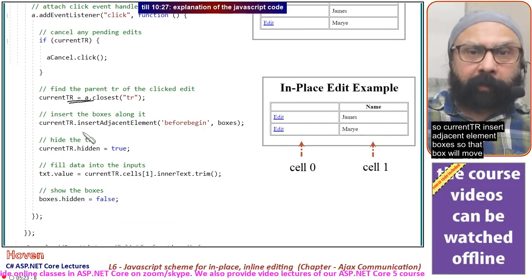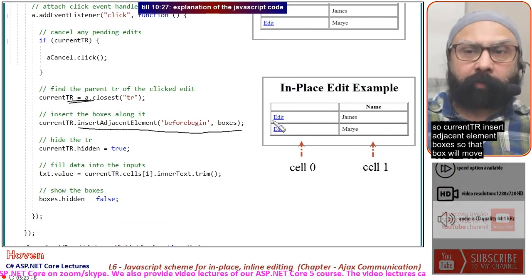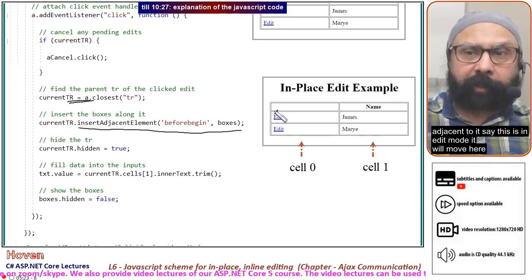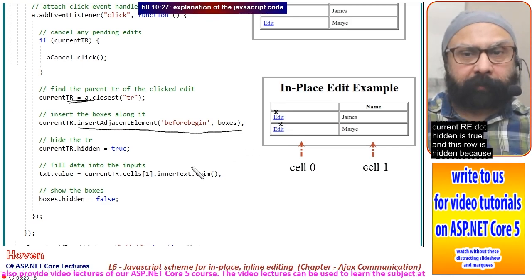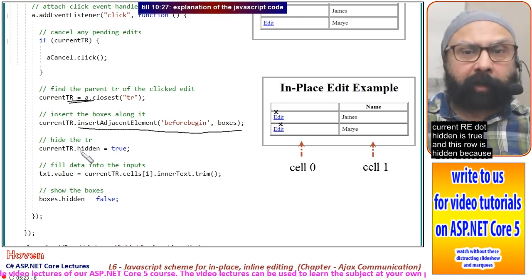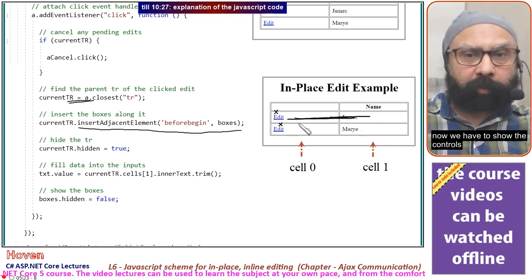CurrentTr.insertAdjacentElement(boxes) moves the box adjacent to it. If this is under edit mode, it moves here. CurrentTr.hidden = true, and this row is hidden because now we have to show the controls.